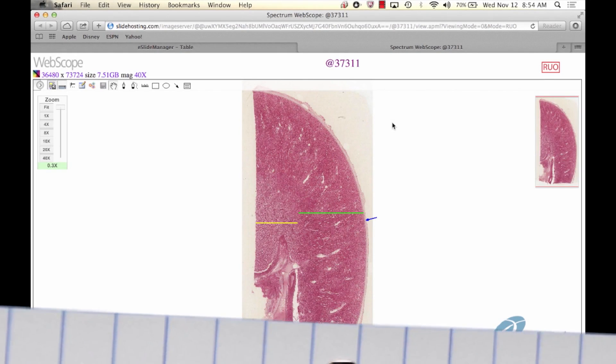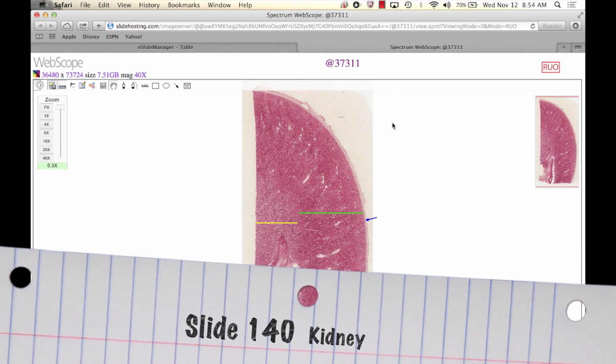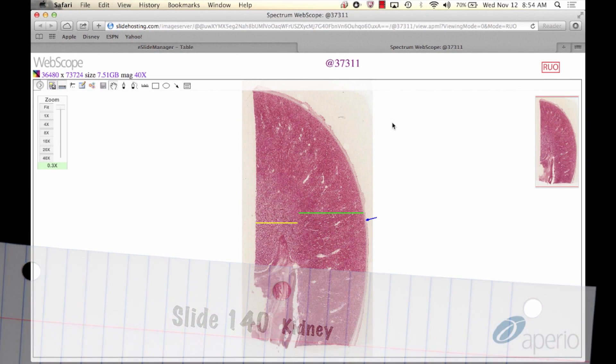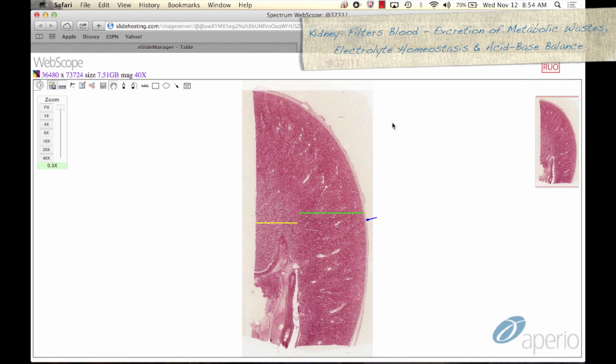We will start today with slide 140, which is a section of kidney stained with H&E. The kidney is the first part of the urinary system and functions to filter the blood for the purpose of excretion of metabolic waste. It is also crucial for water and electrolyte homeostasis and acid-base balance.